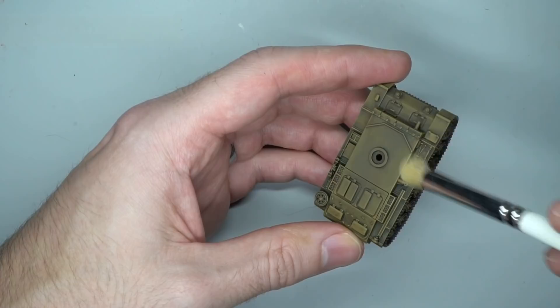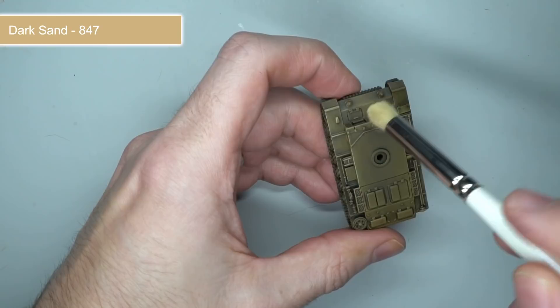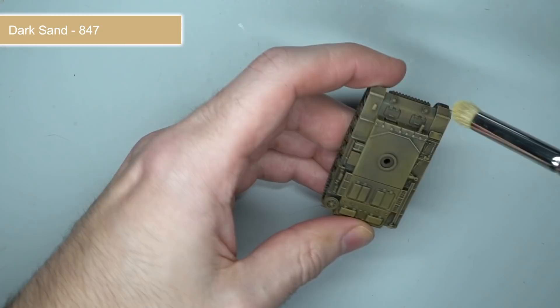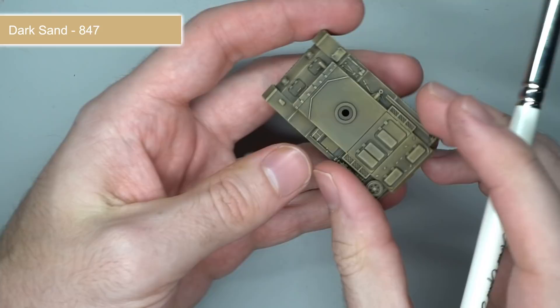My intention for this scheme was high contrast. I wanted the raised edges and details to be bright to contrast strongly against the darker recessed areas. To do this, I drybrushed on dark sand. This time, I used lighter strokes and focused predominantly on the harder edges and details in the armor. This created fine lines of lighter dark sand that enhanced the sharpness of the edges.